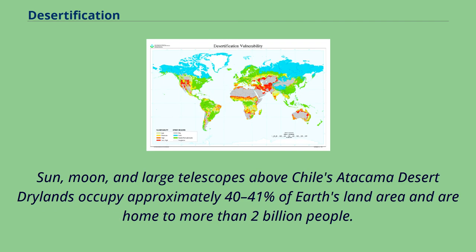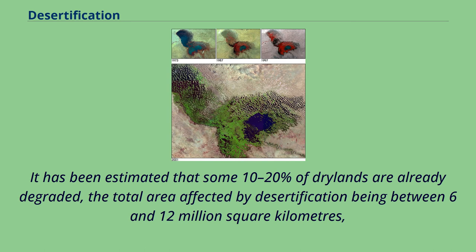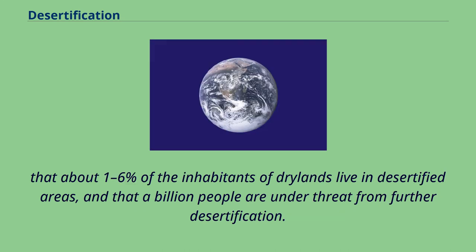Drylands occupy approximately 40 to 41 percent of Earth's land area, and are home to more than 2 billion people. It has been estimated that some 10 to 20 percent of drylands are already degraded, the total area affected by desertification being between 6 and 12 million square kilometers. About 1 to 6 percent of the inhabitants of drylands live in desertified areas, and a billion people are under threat from further desertification.